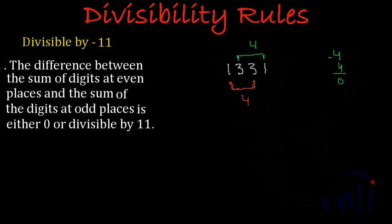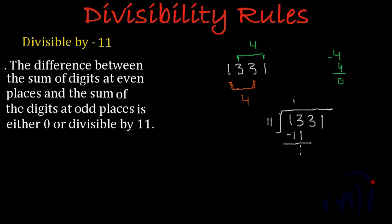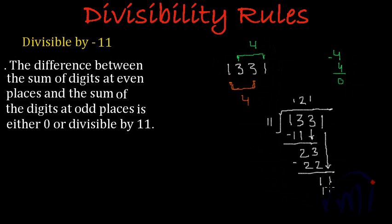Let's check by dividing 1,331 by 11. 11 ones are 11; subtracting, 3 minus 1 gives us 2, and 1 minus 1 is 0. Noting down 3: 11 twos are 22; 3 minus 2 gives us 1. Noting down 1: 11 ones are 11, and 11 minus 11 is 0. So we got our remainder as 0, which means 1,331 is divisible by 11.